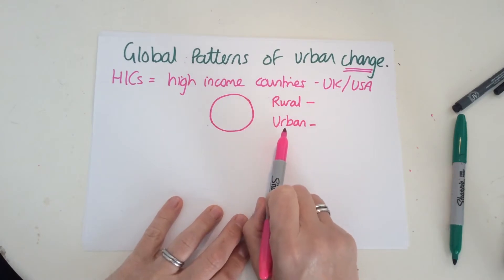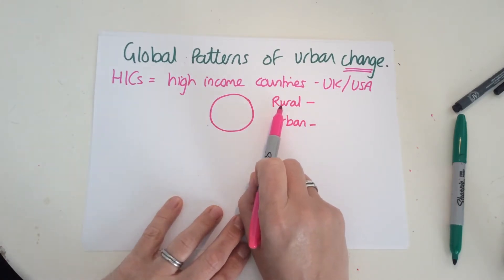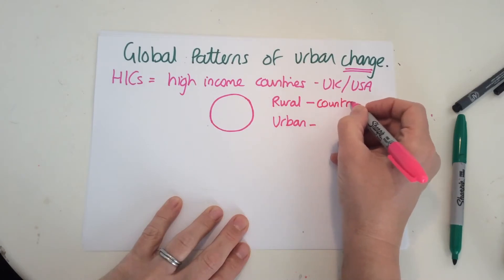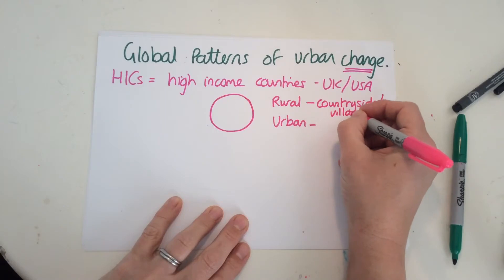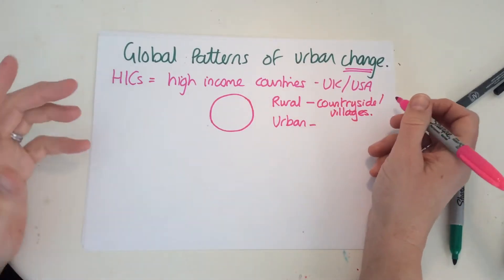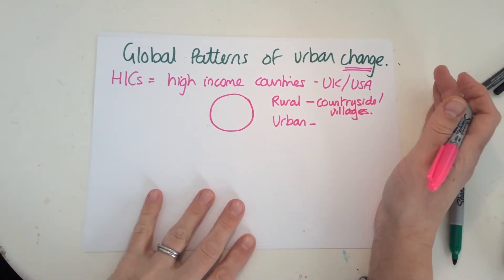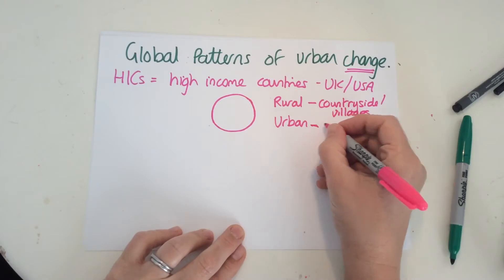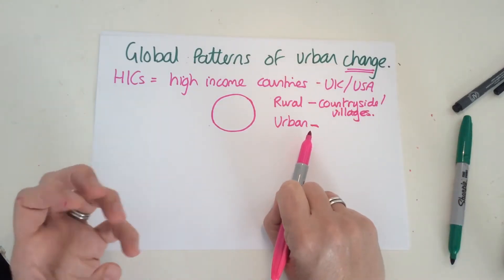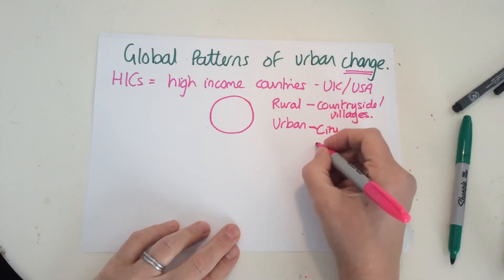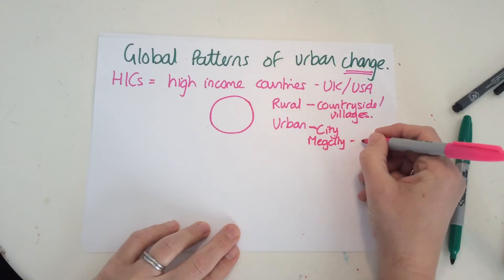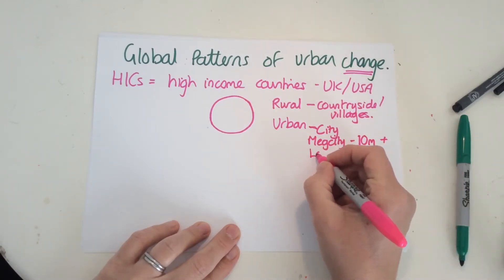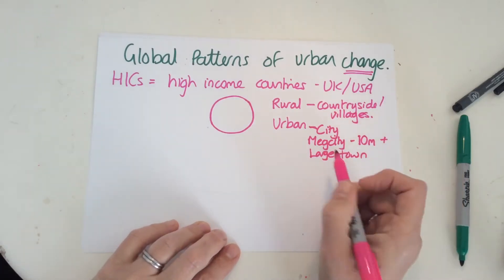Let's remind ourselves what these words mean, because they're absolutely crucial to the whole unit. Rural means countryside or villages — if you live in a village, farmhouse, or small group of houses, you are in a rural area. Urban areas are larger, more populated areas; the classic example would be a city or a mega city.